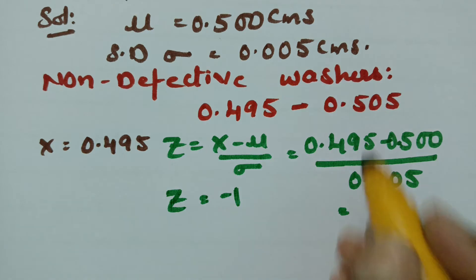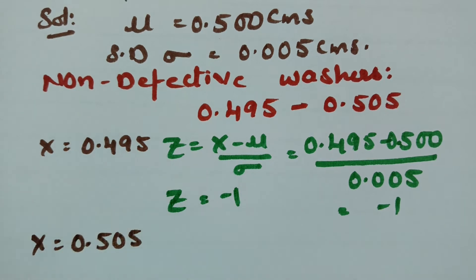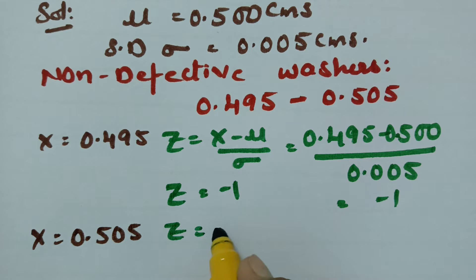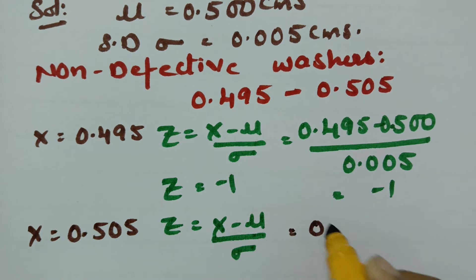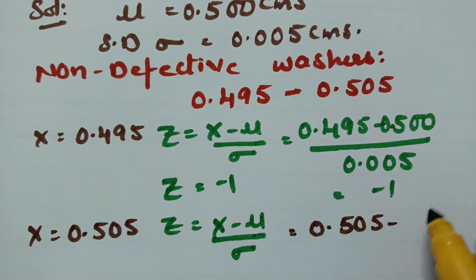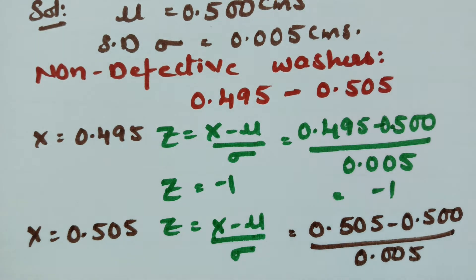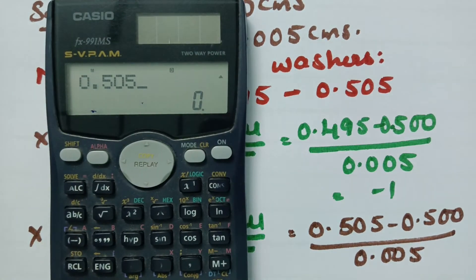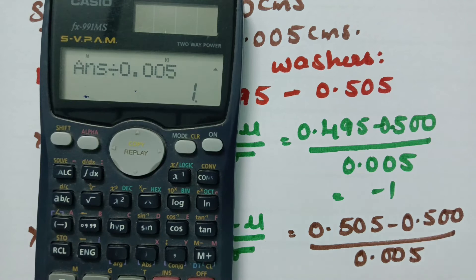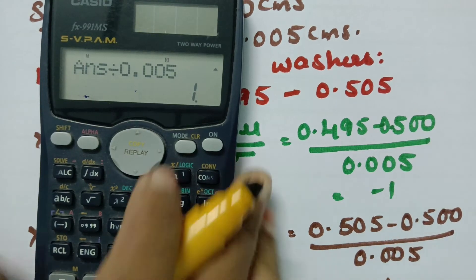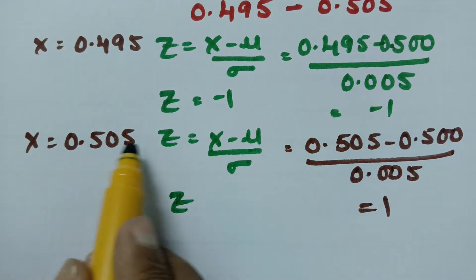When x is equal to 0.505, what will be the z value? z is equal to x minus mu divided by sigma. Substituting: 0.505 minus 0.500 divided by 0.005, the value here is plus 1. So we got z is equal to 1 for x is equal to 0.505.